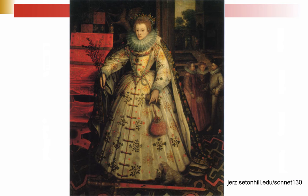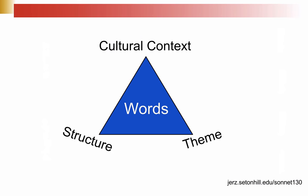Now that we've covered the structure and theme of a sonnet and have a feel for the cultural context in which it was written, I want to address the triangle of analysis. Don't overthink it — the general idea is that the words are at the core of what we're studying, and structure, theme, and cultural context are the periphery. In a literature class, we study that stuff not as an end in itself, but as a framework to help us understand the actual words the poet wrote. I can't say I've taught you anything about Sonnet 130 unless we actually look at the words.